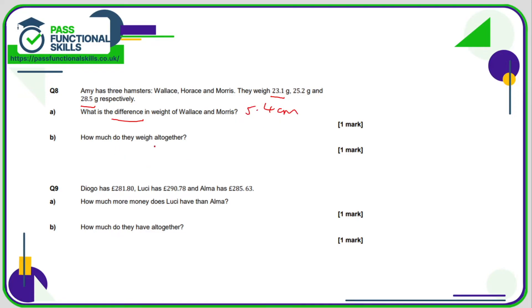How much do they weigh all together? Well we simply need to add 23.1 plus 25.2 plus 28.5. And that comes to a total of 76.8 cm.